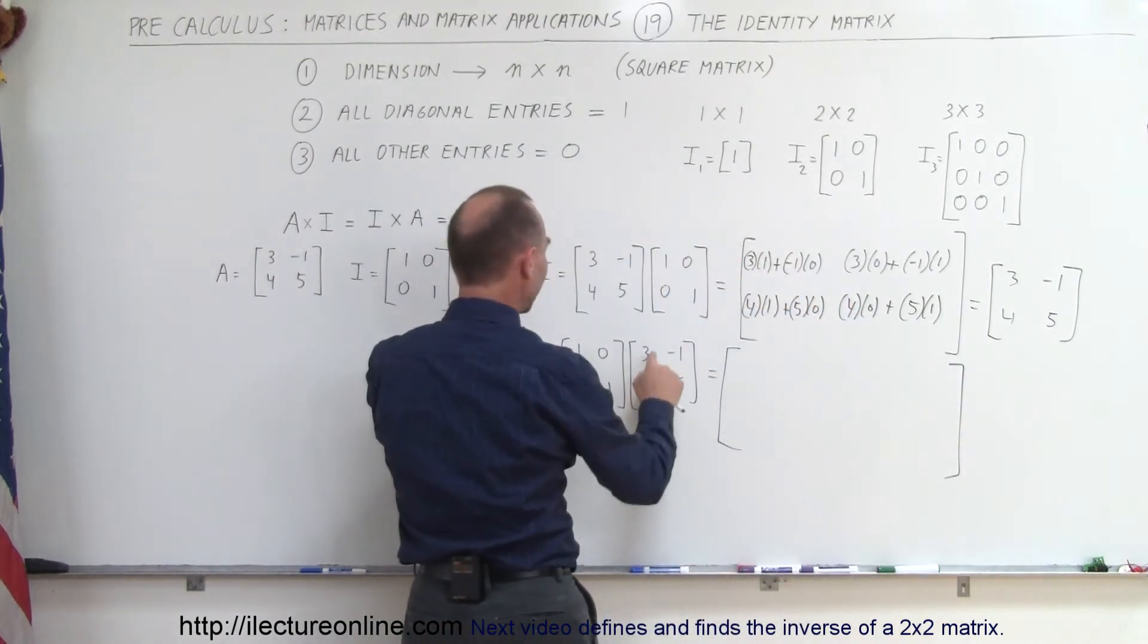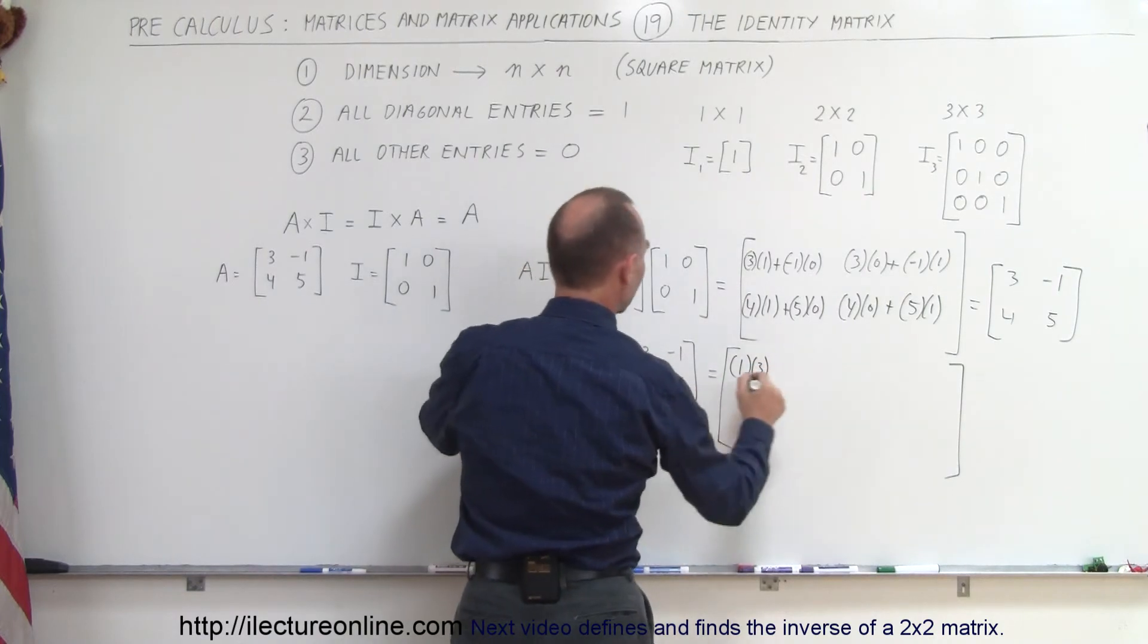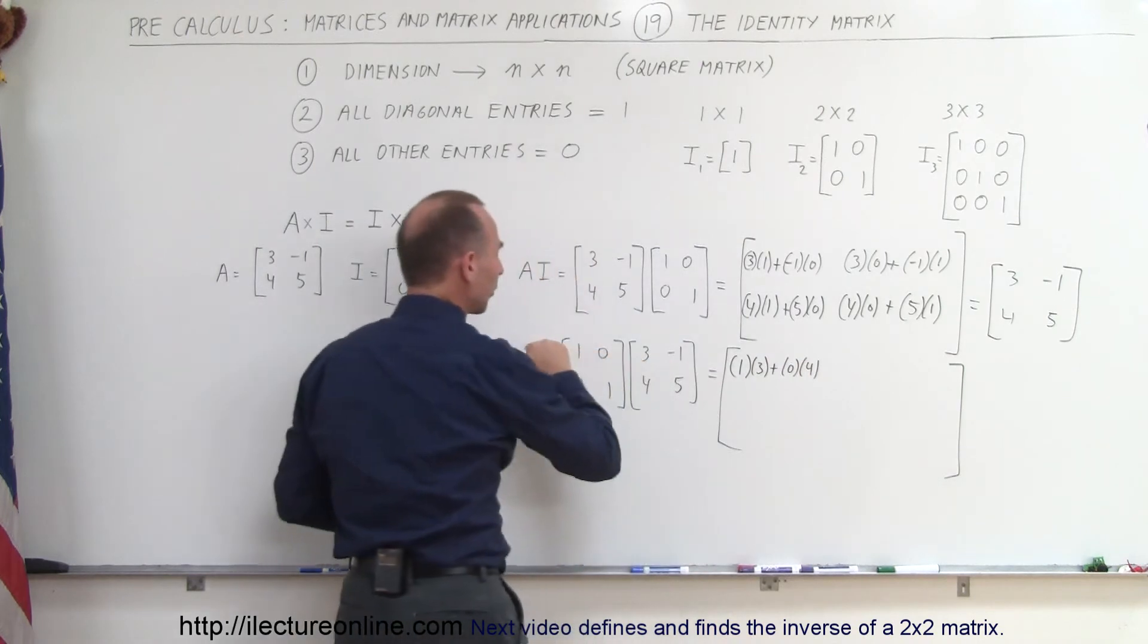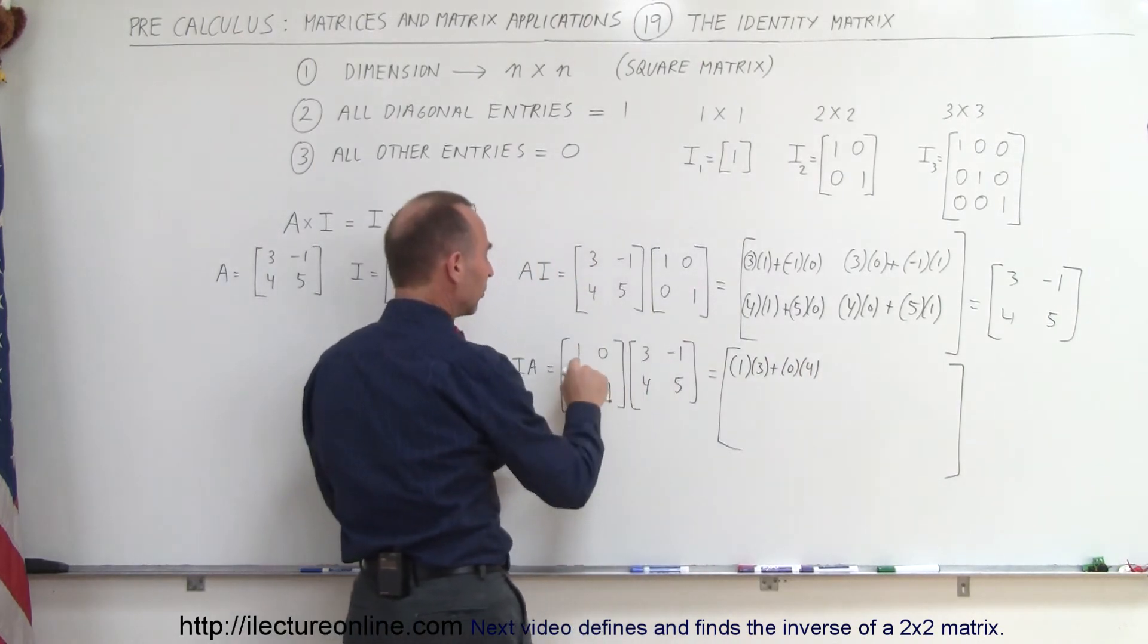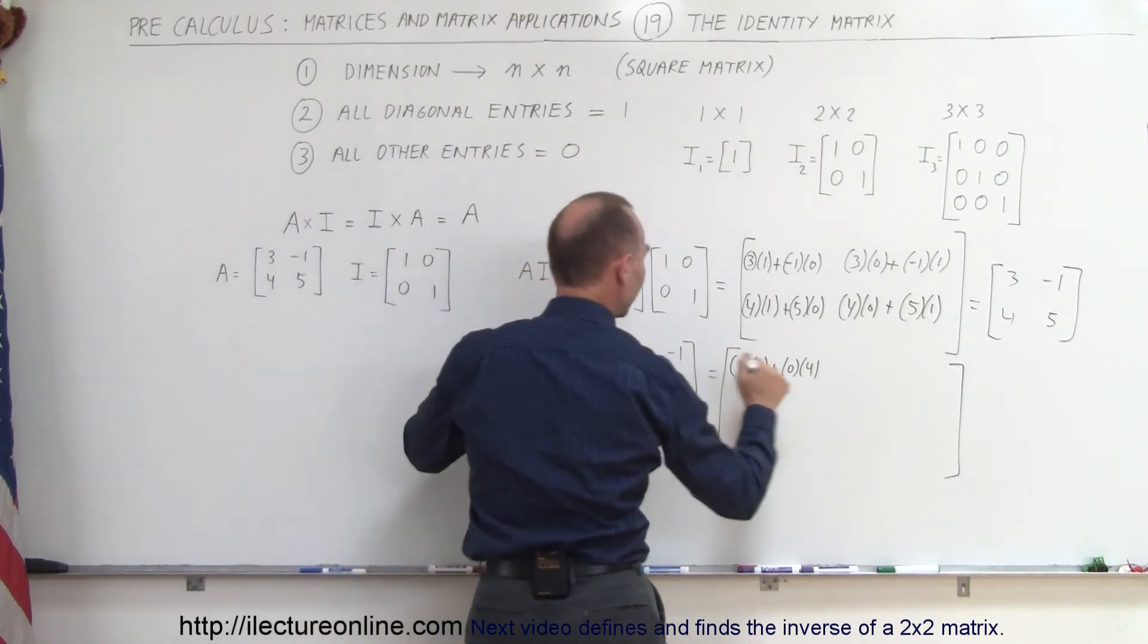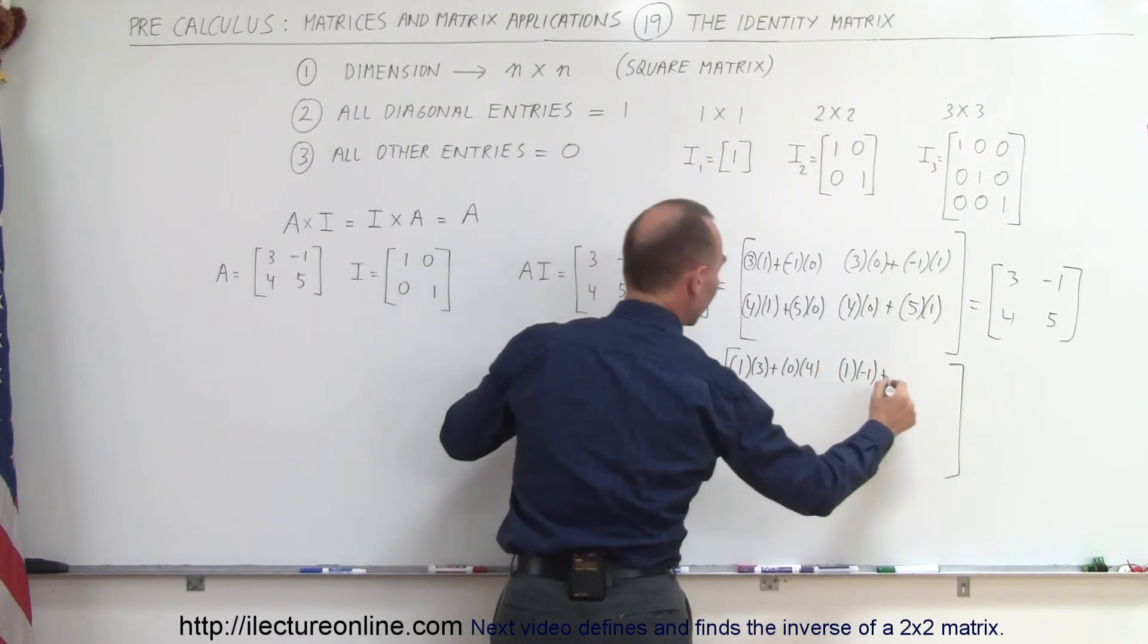Plus 0 times 4. Again, we move across on the rows and down on the columns, so 1 times 3 and 0 times 4. Now, we do the first row and second column, so 1 times the negative 1. Plus 0 times 5.